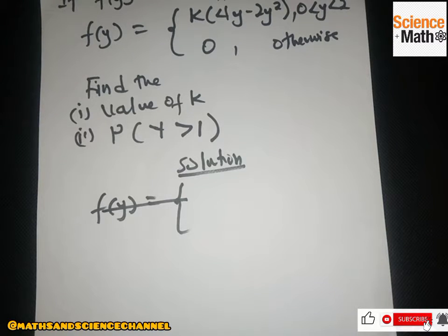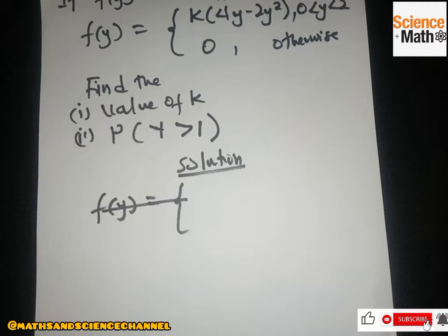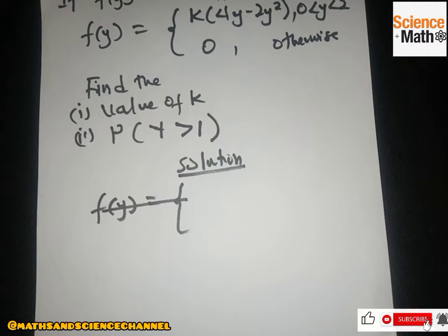Hello everyone, welcome once again to my channel. In this section we are continuing continuous variable questions. We are given a question where f is a PDF: f equals the piecewise function k(4y - 2y²), and zero otherwise. Find the value of k, and then find the probability that y is greater than one.